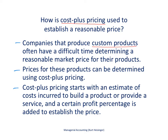For example, we might be a jetliner producer — we might be Boeing — and we produce jetliners for companies such as United Airlines. In establishing the price, we could first start by looking at the costs incurred to produce those jetliners, and from there we would add a certain profit percentage to establish the price.